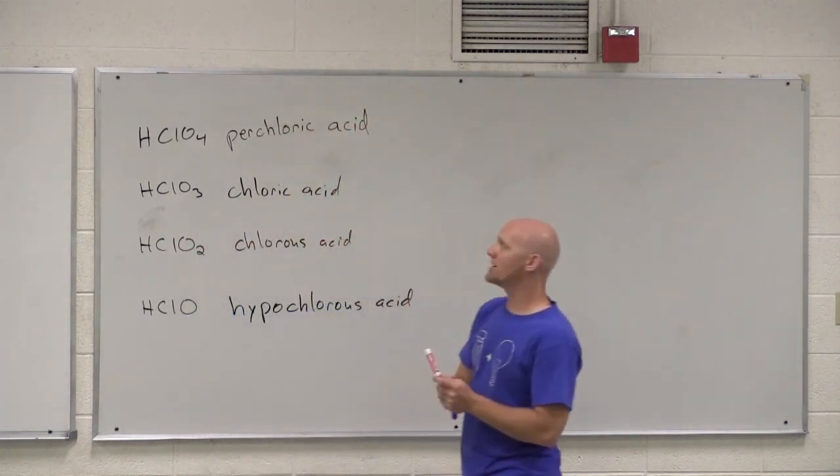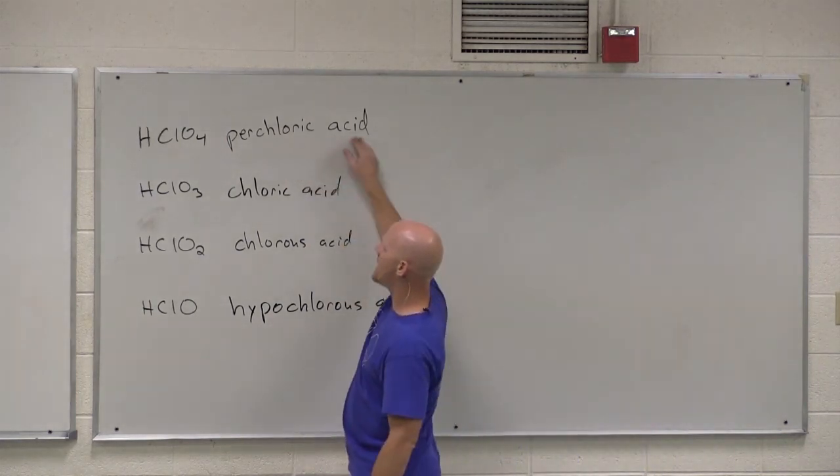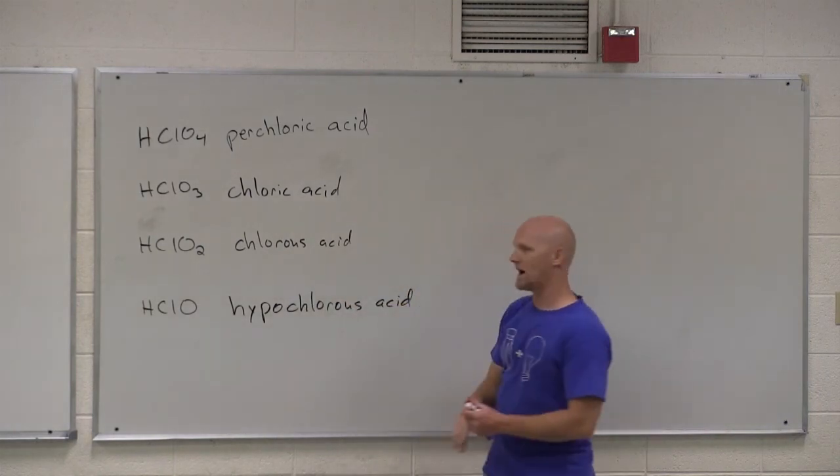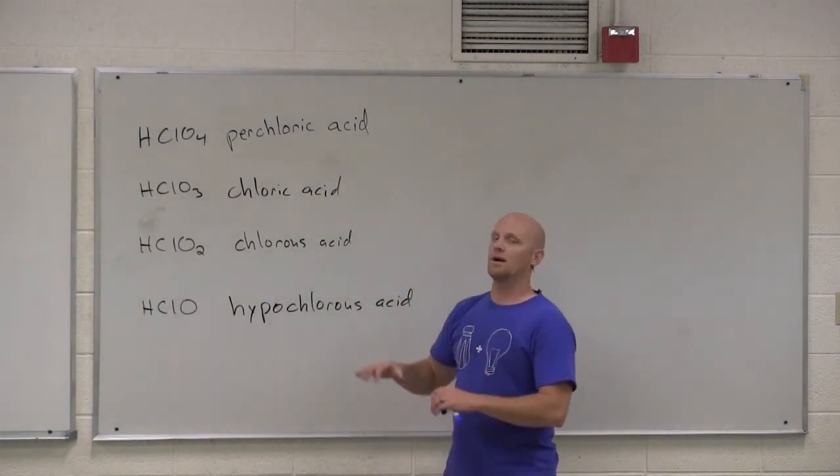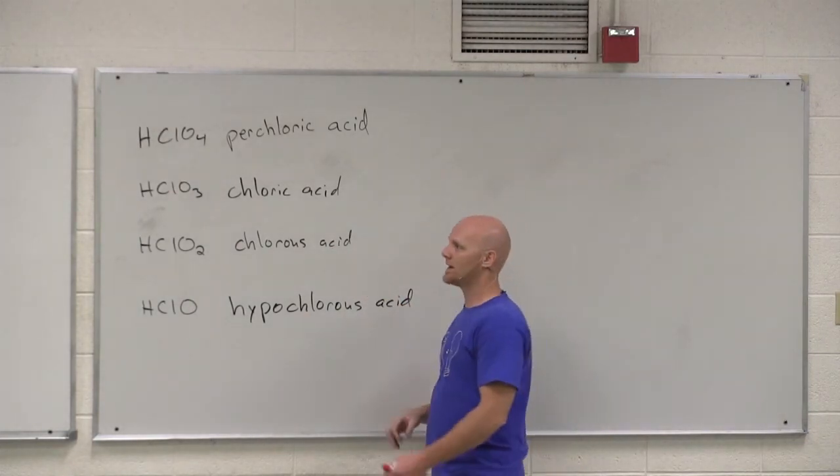And it works the same way with bromine and iodine, the same four. So like for iodine, you'd have periodic acid, iodic acid, iodous acid, and hypoiodous acid, and so on and so forth. Any questions on naming oxyacids? Fantastic.